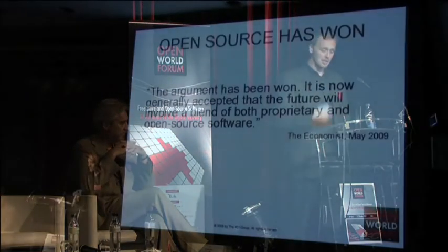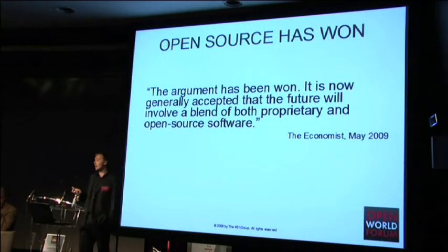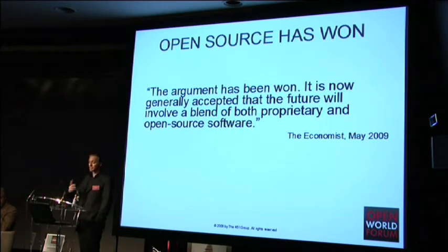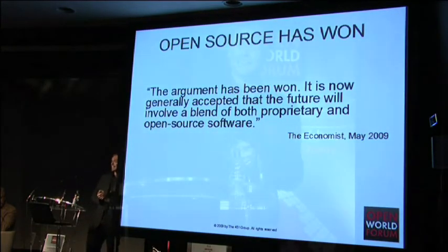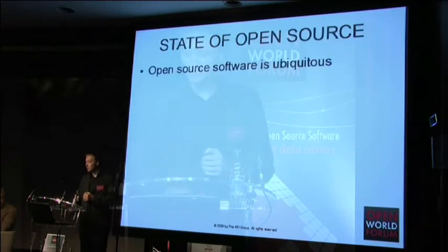This year we've seen multiple declarations that the war between proprietary and open source software is over — and not just that, but that open source has won. A key example was an article published by the Economist in May. When a publication like the Economist declares open source to have won the argument and to be an accepted part of the industry, that gives you a key indication of how far free and open source software has come.